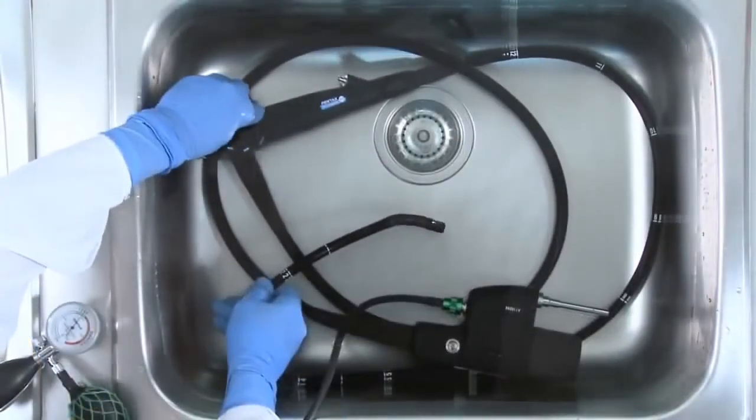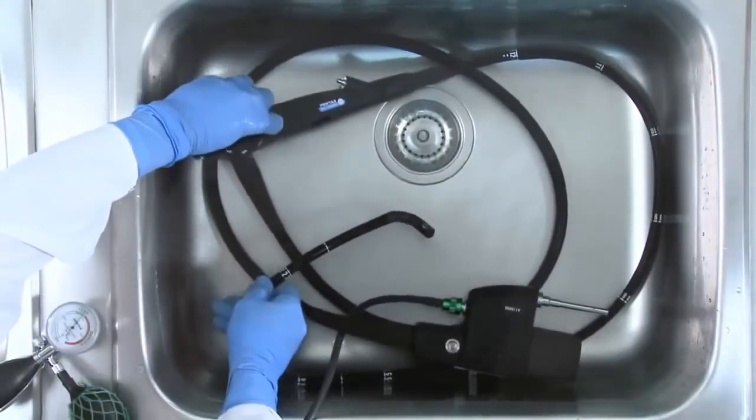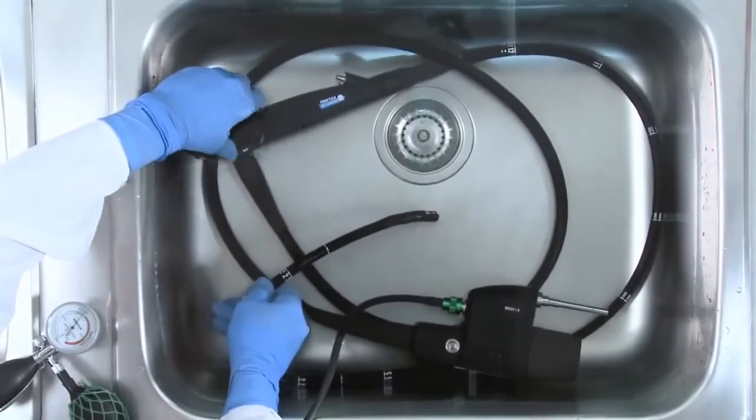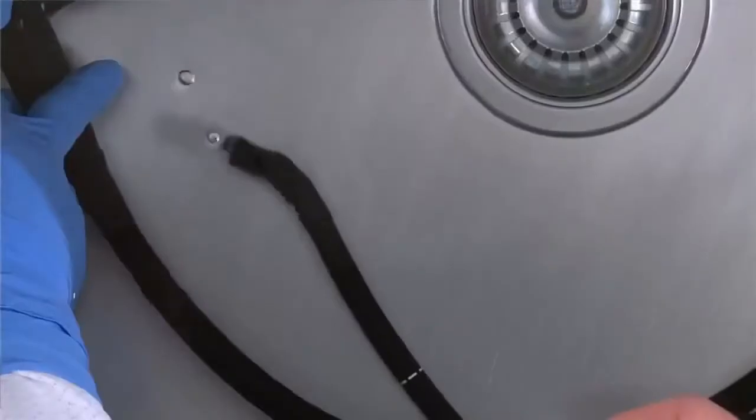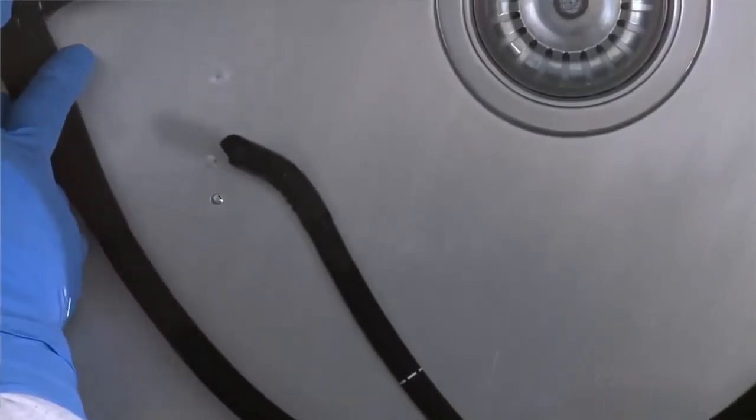Next, deflect the distal tip in all directions while alternately looking at the leak tester gauge for movement of the needle and looking for bubbles in the water, particularly on the exterior of the bending rubber.